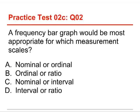Number 2. A frequency bar graph would be most appropriate for which measurement scales? The choices are nominal or ordinal, ordinal or ratio, nominal or interval, or interval or ratio. The answer to this one for a bar graph is nominal or ordinal. Those are the categorical levels of measurement. And you would use a bar graph because you can't specify how far apart they are.